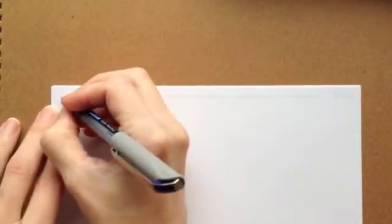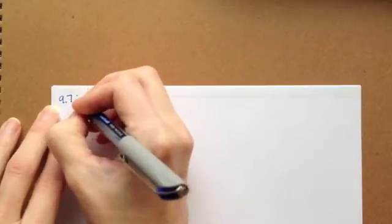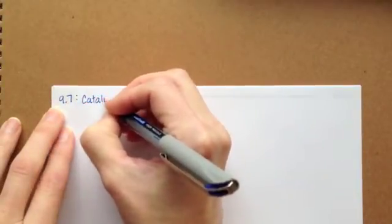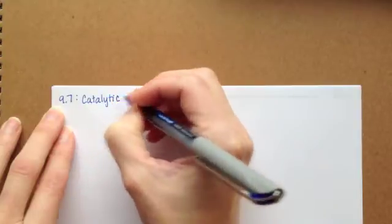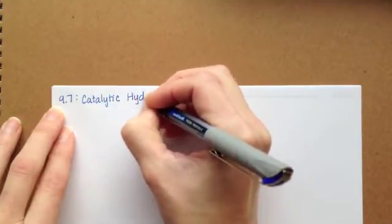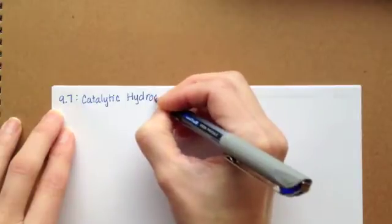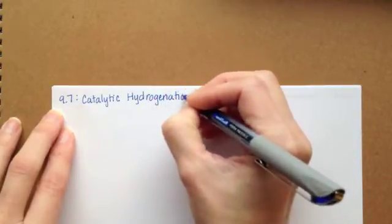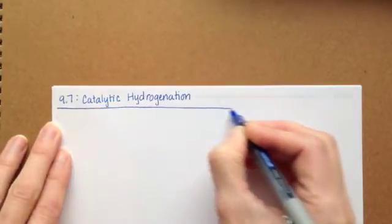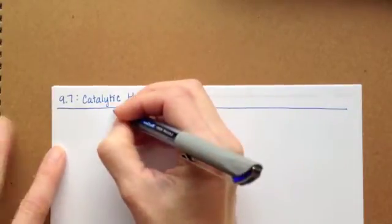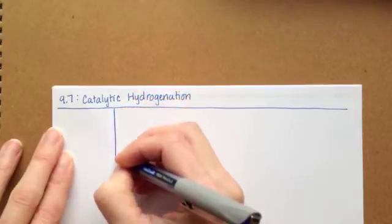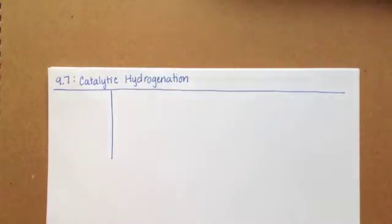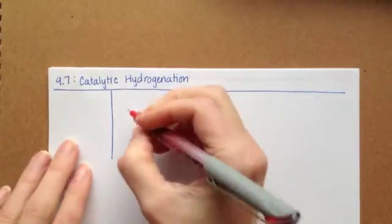Section 9.7 is on catalytic hydrogenation. In this reaction we are adding hydrogen across the double bond. And so for example,